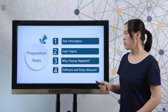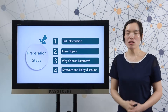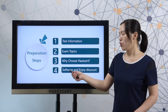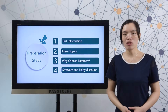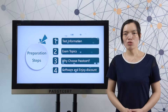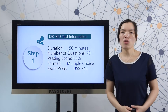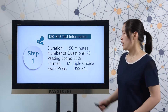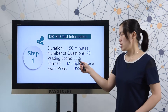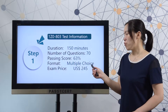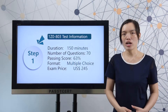First, learning real test information. Let's view the real test information first. Here, you can check there are 77 questions in your 1Z0-803 exam. The exam duration is 150 minutes. The passing score is 63%. The exam format is multiple choice. And the exam price is 245 US dollars.